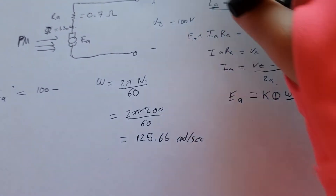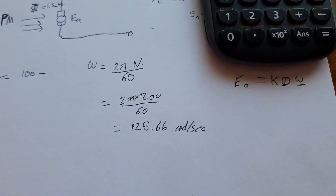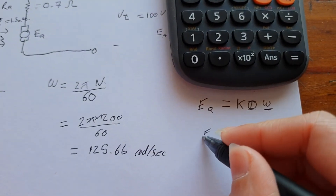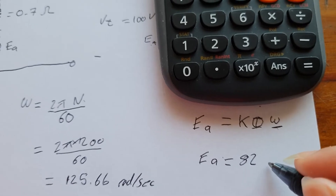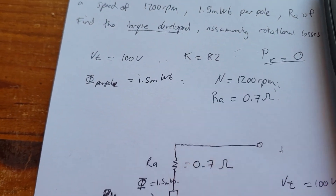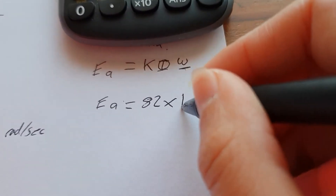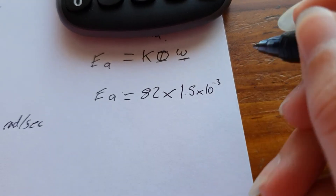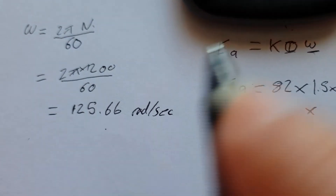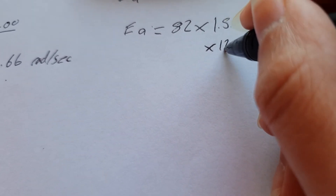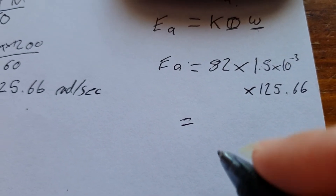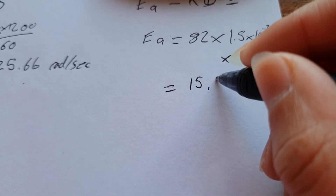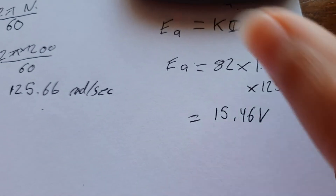Now that we have our speed in the proper units, we can sub it into our equation. K is 82, times our flux — but it's in milliwebers, so do not forget to convert it: times 10 to the negative 3 — times our speed, 125.66. So EA equals 15.46 volts.